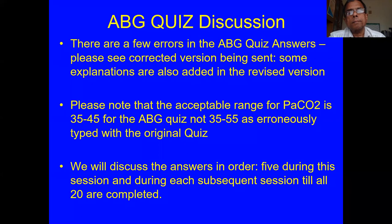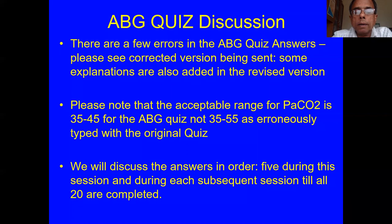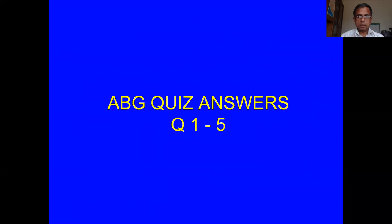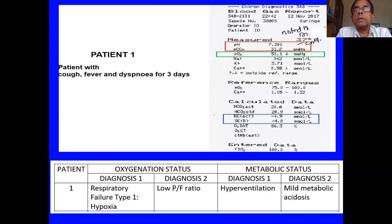One of the corrections was I had put the ABG CO2 normal range as 35 to 55 — it should be 35 to 45. We will discuss the answers in order and sort out any doubts. We start with the ABG, then move on to the lecture. So this is the first ABG: patient with cough, fever, and dyspnea for three days. I hope we've all done the answers.